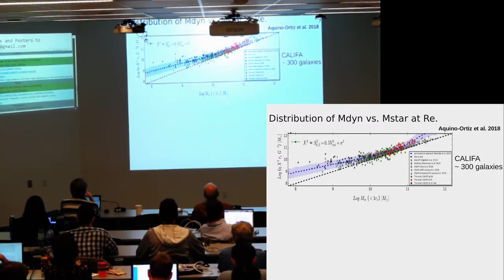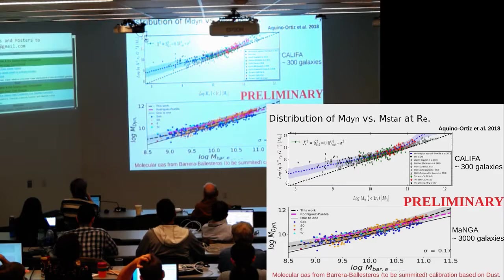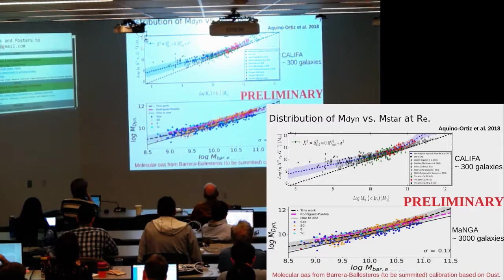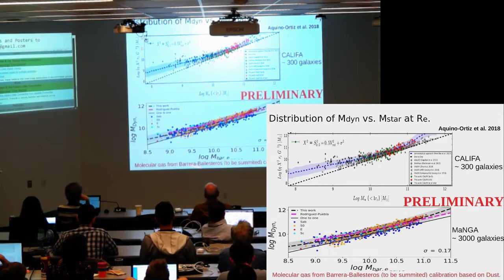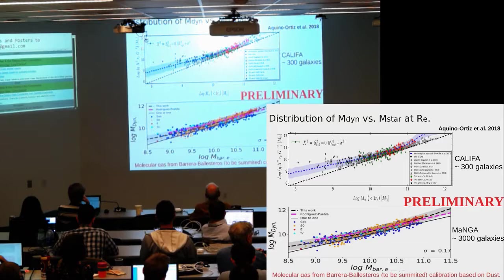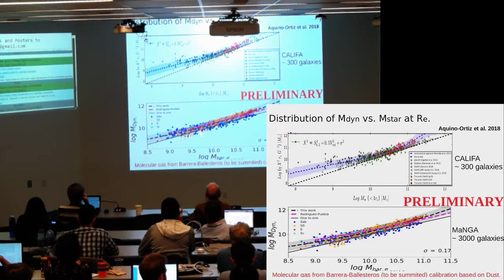We have a calibrated equation to estimate dynamical masses given the total velocity parameter at one effective radius. We then estimated the total velocity parameter in the MaNGA sample — more or less 3,000 galaxies — and applied this calibrated equation. In the y-axis, the total dynamical mass at one effective radius versus the baryonic mass also at one effective radius. The magenta line is the prediction of semi-empirical modeling by Rodriguez-Puebla. Basically, we are in agreement with results using CALIFA galaxies and with the semi-empirical modeling. Galaxies with low and high baryonic mass appear more dark-matter-dominated than those with intermediate baryonic mass.